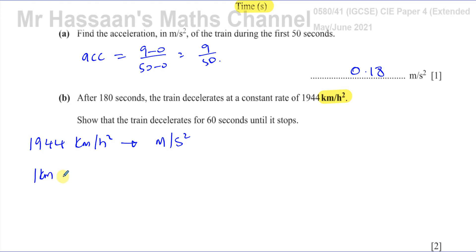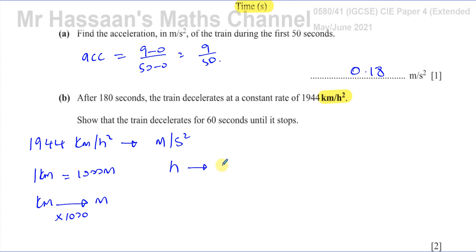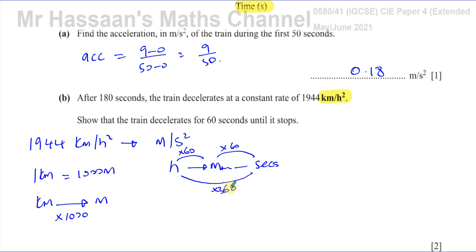So I've got to take 1,944 kilometers per hour squared and change that into meters per second squared. First, let's look at kilometers: one kilometer is equal to 1,000 meters, so to go from kilometers to meters I multiply by 1,000. Now for hours to seconds: going from hours to minutes is multiplying by 60, then from minutes to seconds is multiplying by 60 again — so from hours to seconds you multiply by 3,600. If you want to go from hours squared to seconds squared, you multiply by 3,600 squared.